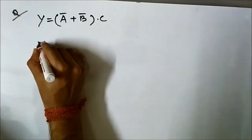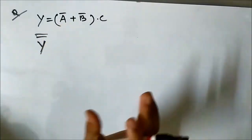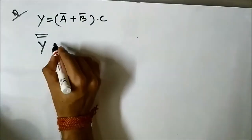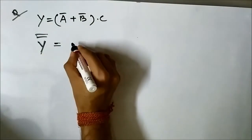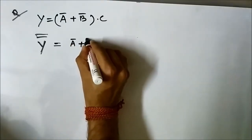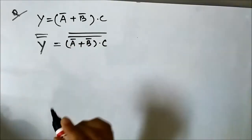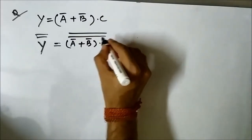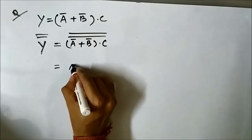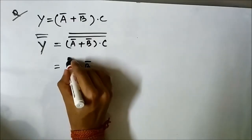We take the double complement of this expression — it keeps the whole expression unchanged, because the double complement of anything is the same. So when we take the double complement of this, it becomes A complement OR B complement C double complement. We will apply De Morgan's theorem here, and it will become A complement OR B complement, whole complement.